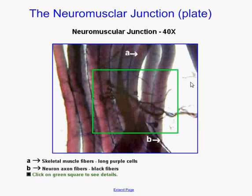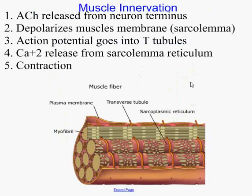Muscles are innervated by nerves, which come into a neuromuscular junction. They release neurotransmitters, as we've discussed before, which then cause an action potential to be generated in a muscle.